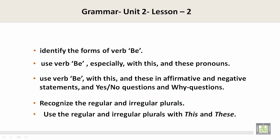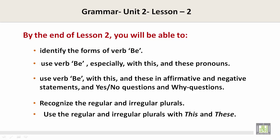Objectives. By the end of Lesson 2, you will be able to: identify the forms of the verb be; use the verb be especially with the pronouns 'this' and 'these'; use the verb be with 'this' and 'these' in affirmative and negative statements, yes or no questions, and WH-questions; recognize regular and irregular plurals; and use regular and irregular plurals with 'this' and 'these'.